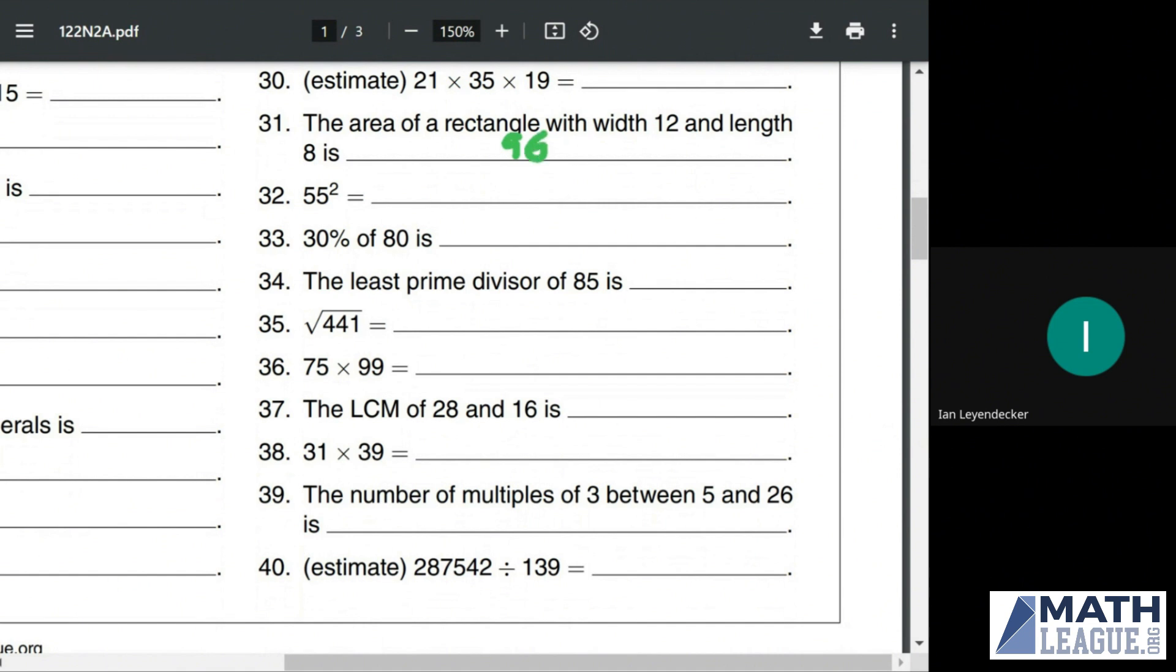55 squared isn't one you're going to have memorized, but because it is a square of 5, you can also think of it as 11 squared times 5 squared, which is going to be 121 times 25. 121 is one more than 120, which is divisible by 4. It's 30 times 4. So 30 times 4 times 25 is 30 times 100 or 3000. And then we add one more instance of 25 and we get 3025.